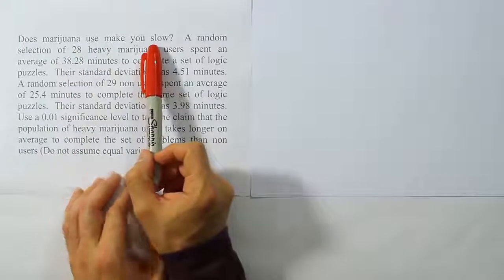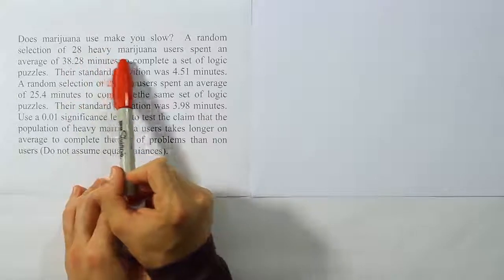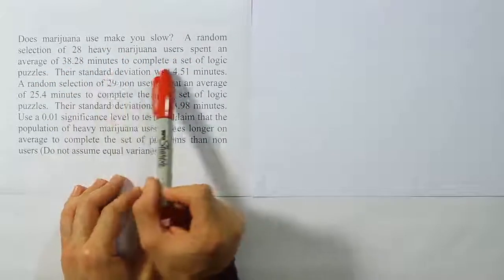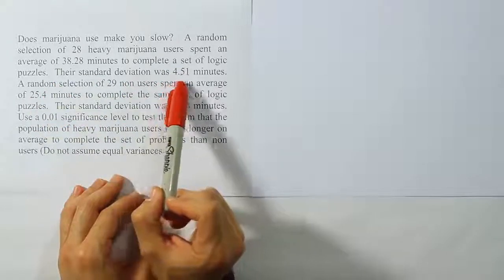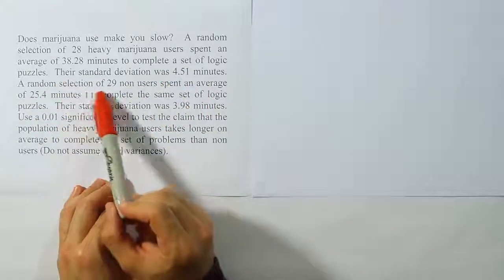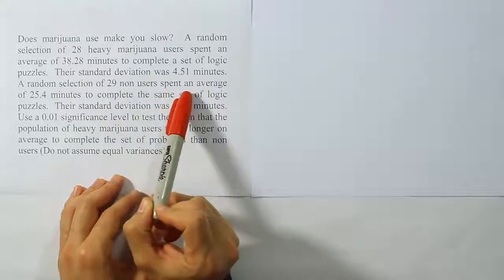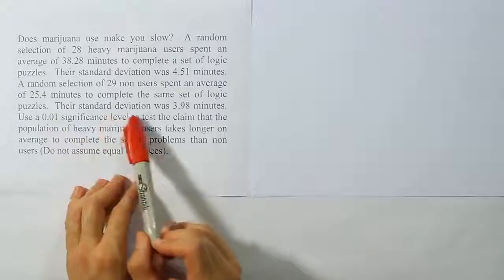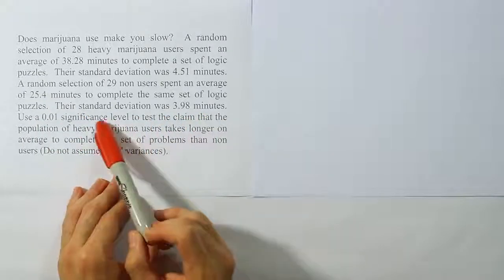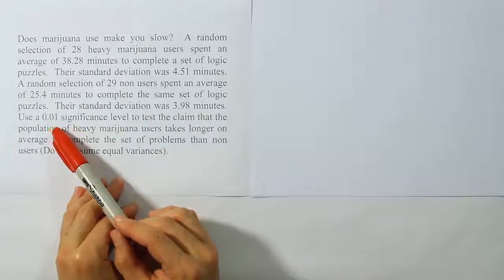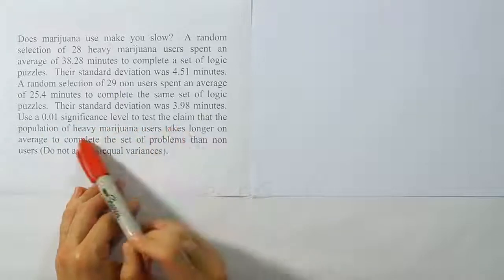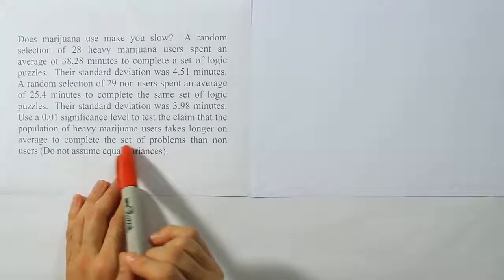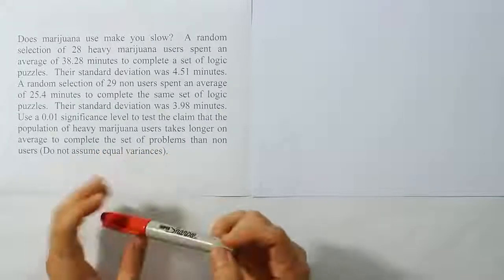Does marijuana use make you slow? A random selection of 28 heavy marijuana users spent an average of 38.28 minutes to complete a set of logic puzzles, with a standard deviation of 4.51 minutes. A random selection of 21 non-users spent an average of 25.4 minutes, with a standard deviation of 3.98 minutes. Use a 0.01 significance level to test the claim that heavy marijuana users take longer on average. Do not assume equal variances.